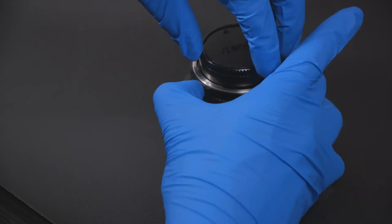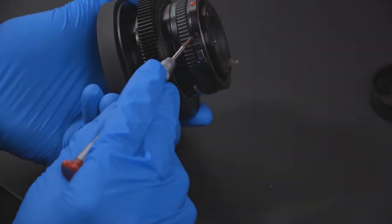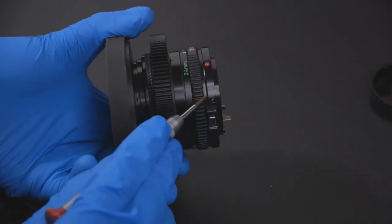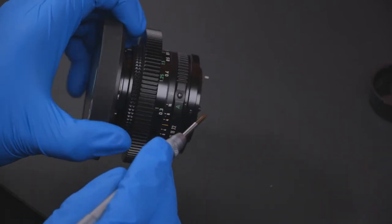Next, we will remove the rear lens cap. We will remove the three small screws that are on the barrel of the lens.